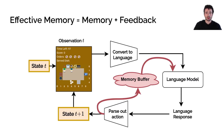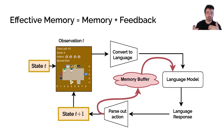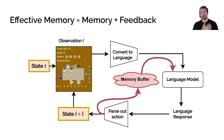One of our main proposals in this work is that we want the agents to have a sense of identity and memory. Since we're prompting the agents every single time step, we want the agents to remember what they were talking about before, because language models don't have any explicit memory.